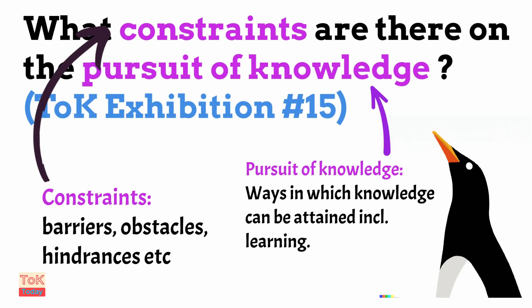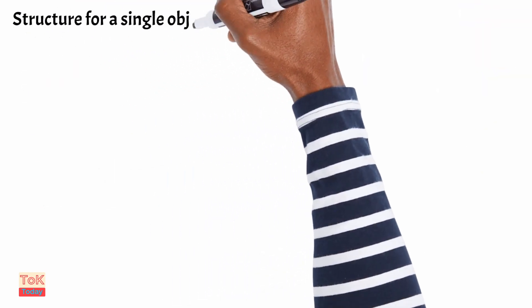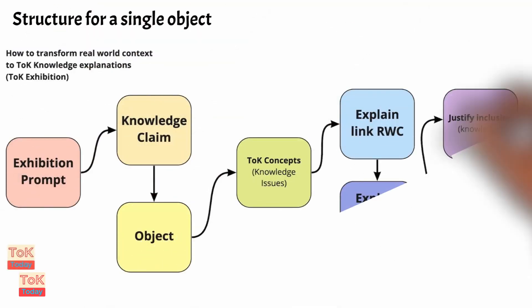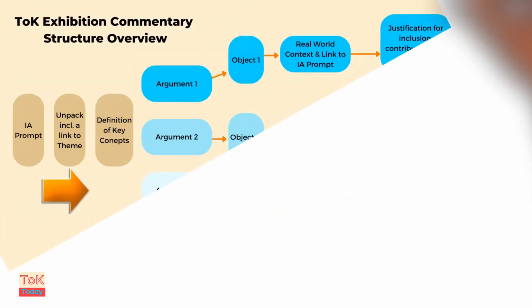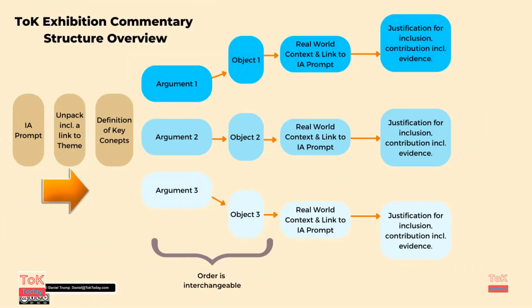Here's the suggested structure for how you would write up a single object. You need to say what the object is — you could include the TOK concept if relevant. You need to explain the link between the object and the real-world context, explain the link to the knowledge claim, and then justify the inclusion of that object.